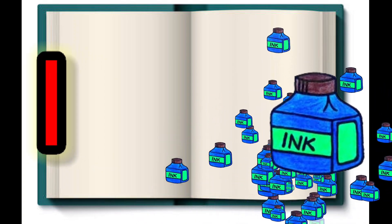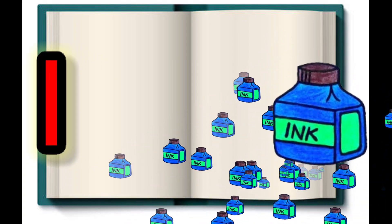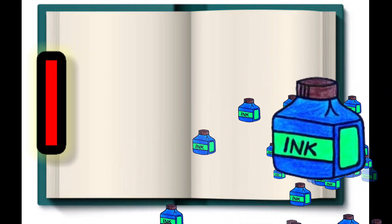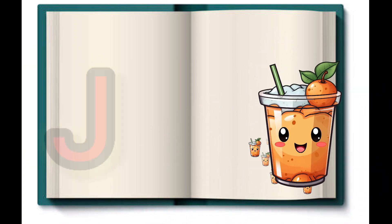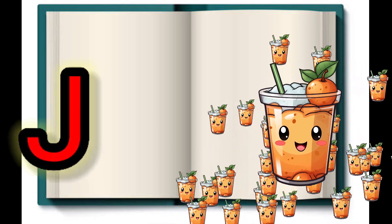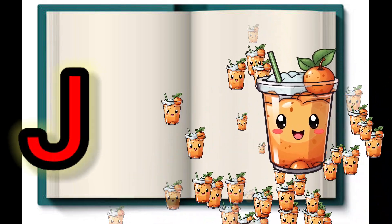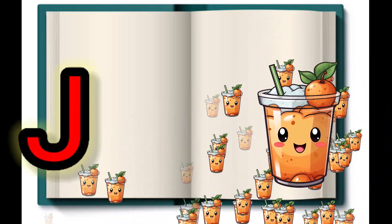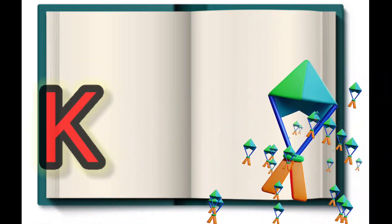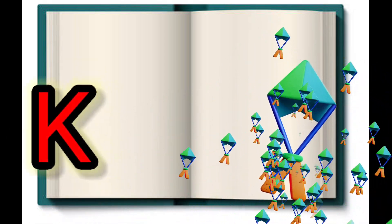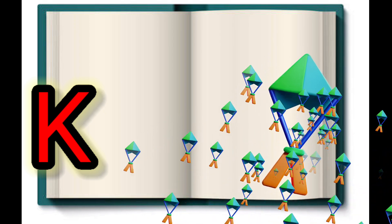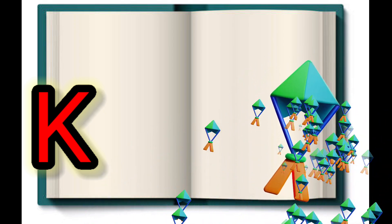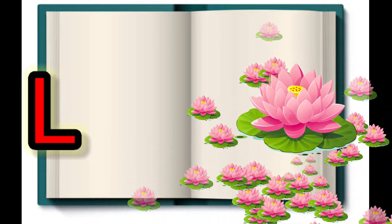II for Inkpot, JJ for Juice, KK for Kite, LL for Lotus.